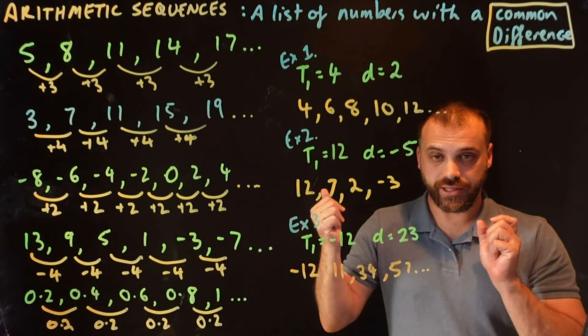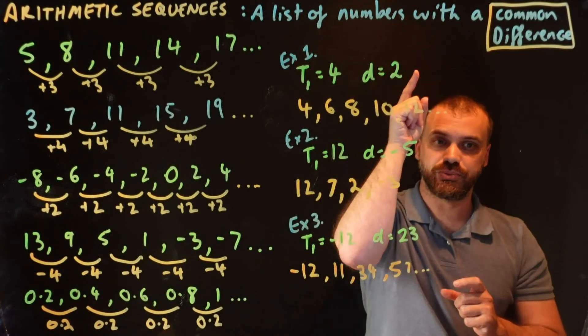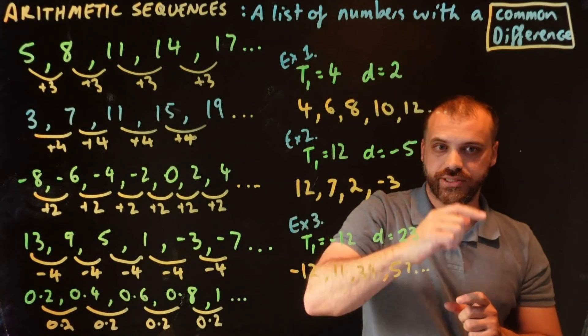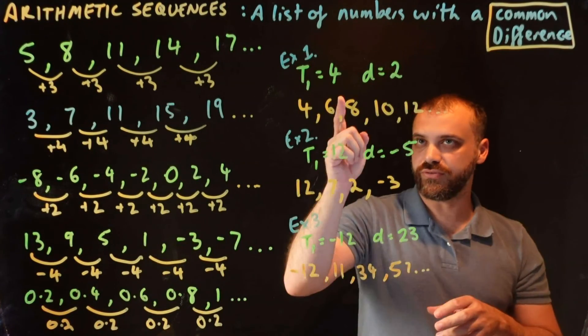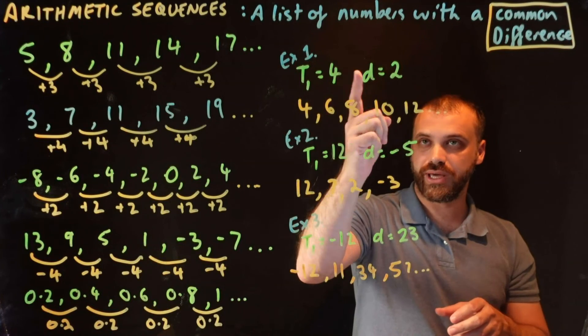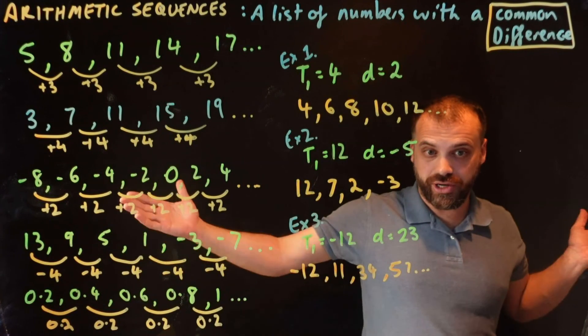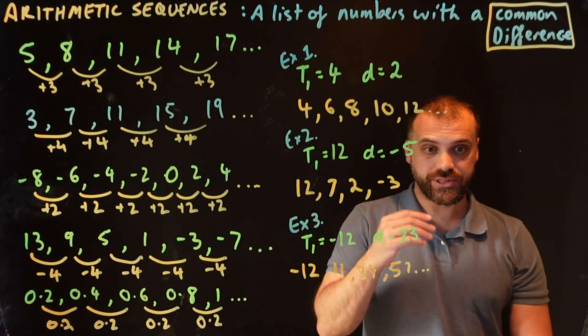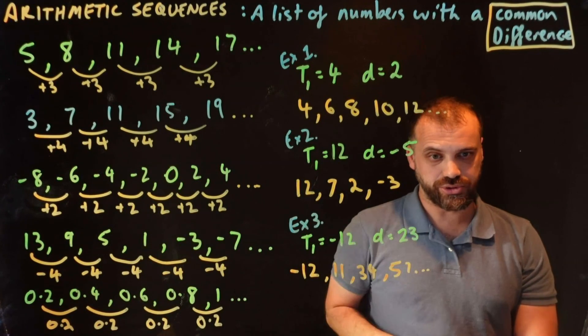Summing up: an arithmetic sequence is a list of numbers with a common difference. And if you know the first term and the common difference, you can write out the sequence for as many terms as you want.